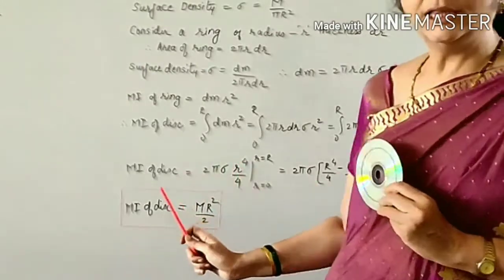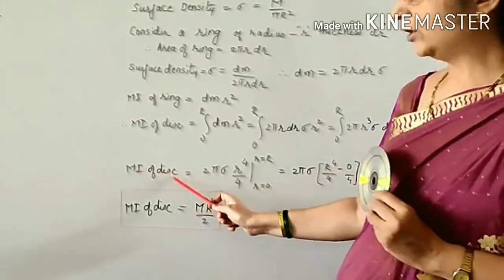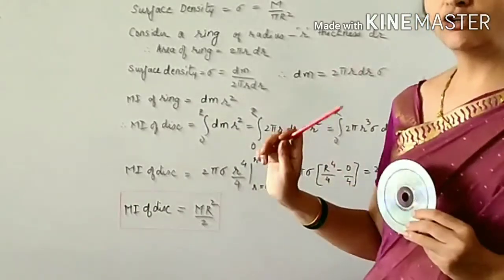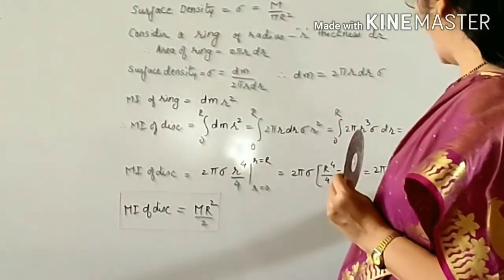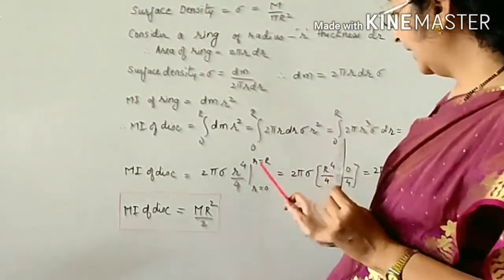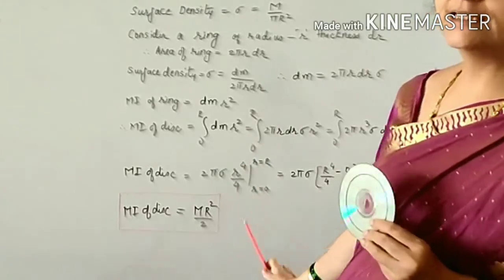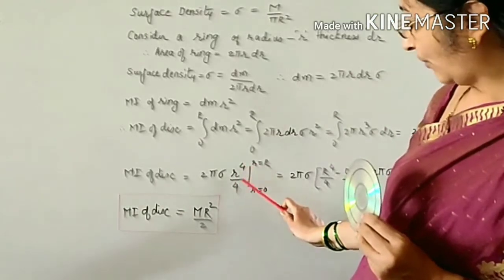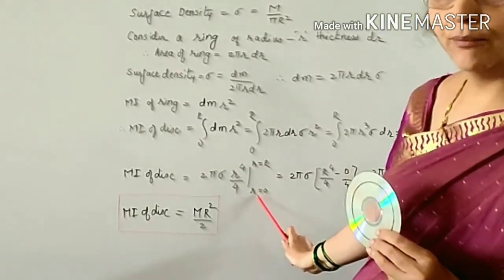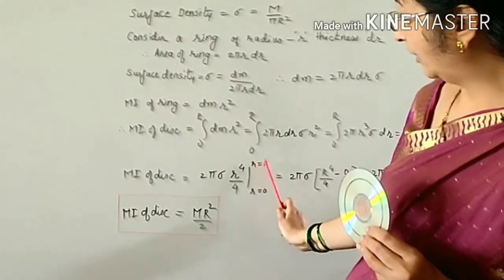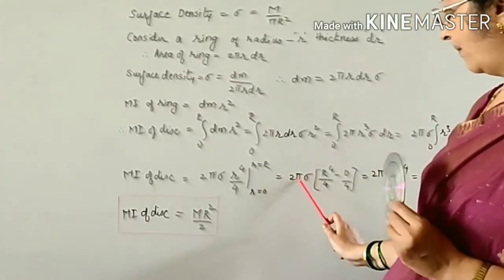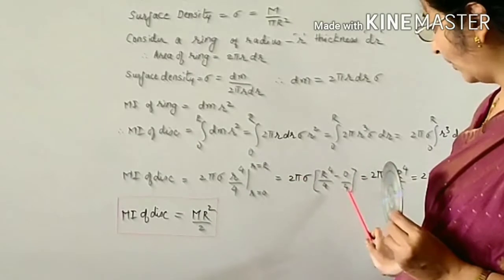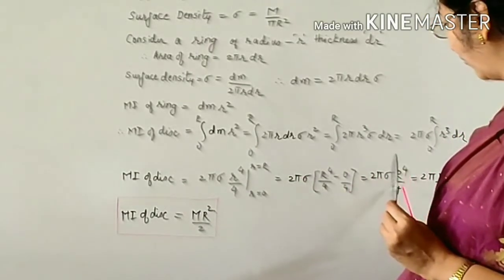Performing the integration: ∫₀ᴿ r³ dr = r⁴/4, evaluated from 0 to R. So the moment of inertia becomes I = 2π·σ · R⁴/4, since the lower limit gives zero.